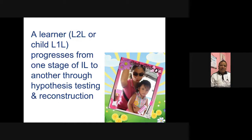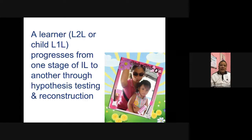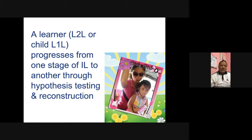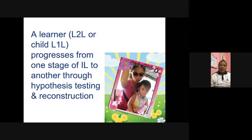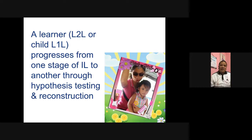Interlanguage is a collection of a child's hypotheses about the grammar. The child will give an utterance and receive feedback — and that feedback has to do with whether the person understands him or not, not verbal correction of grammar. If not understood, he will reconstruct his hypothesis about the grammar.